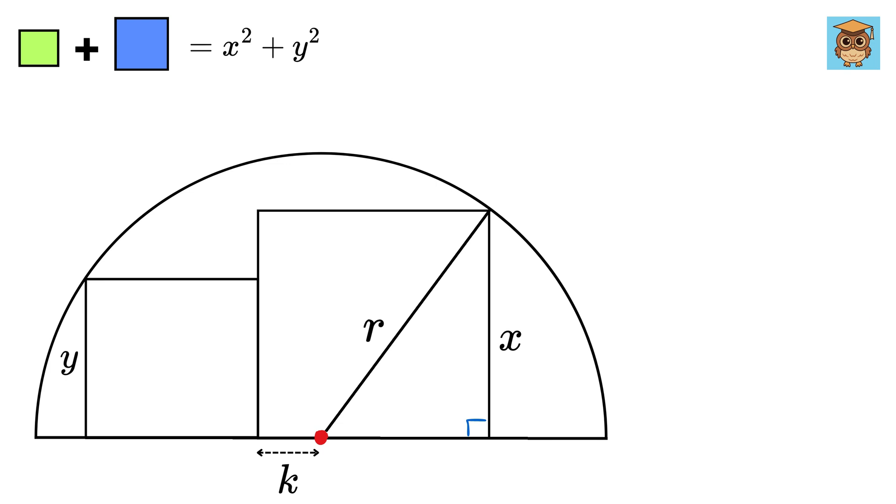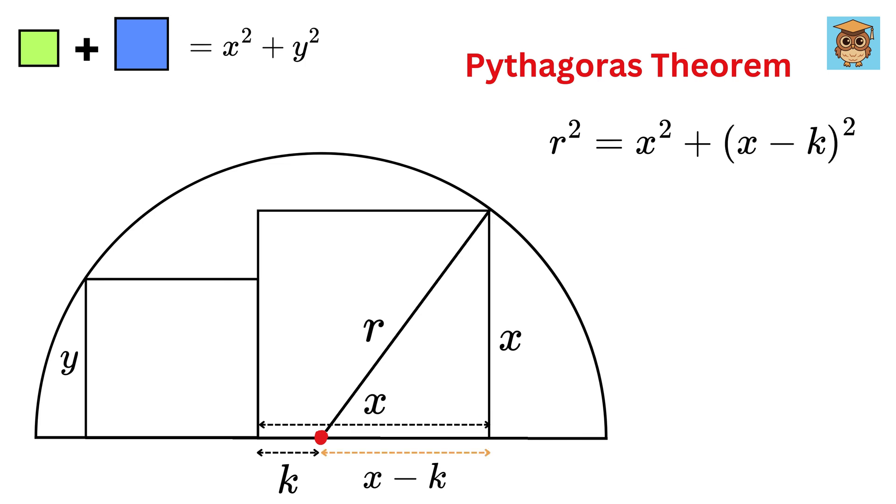Now it's time to use our favorite Pythagoras theorem. We get R squared equals x squared plus (x minus K) whole squared.